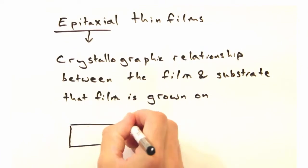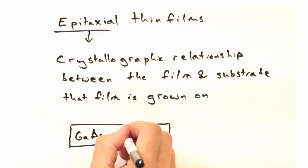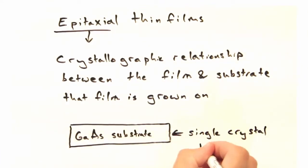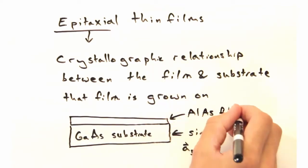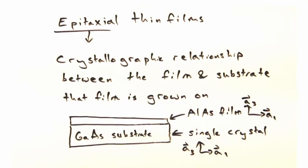So for example, growing aluminum arsenide on gallium arsenide. Exactly. The lattice parameters of the two materials don't match exactly, but they're close and the film lattice is oriented with the substrate lattice.